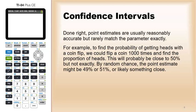For example, to find the probability of getting heads with a coin flip, you could flip a coin a thousand times, and while your answer will probably be close to 50%, it's unlikely to be exactly.